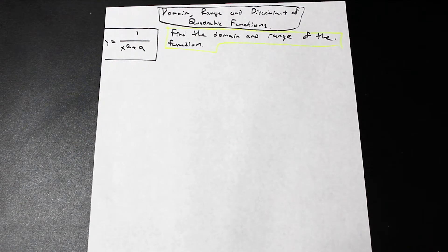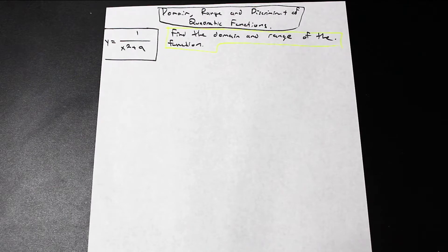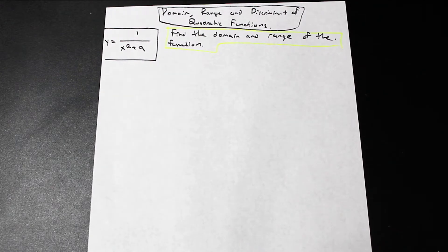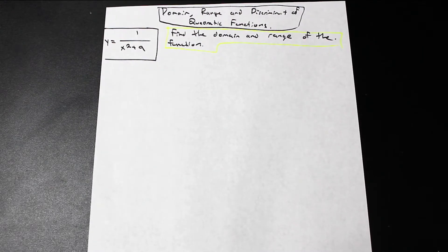We're going to start out this video by going over the previous video we did on domain and range, which was a trick we showed you that you can use for more simple functions that have inverses. This is for a function that, for example, maybe doesn't have an inverse, or it's a quadratic function — in which case we can show you how to evaluate that using this really cool trick.